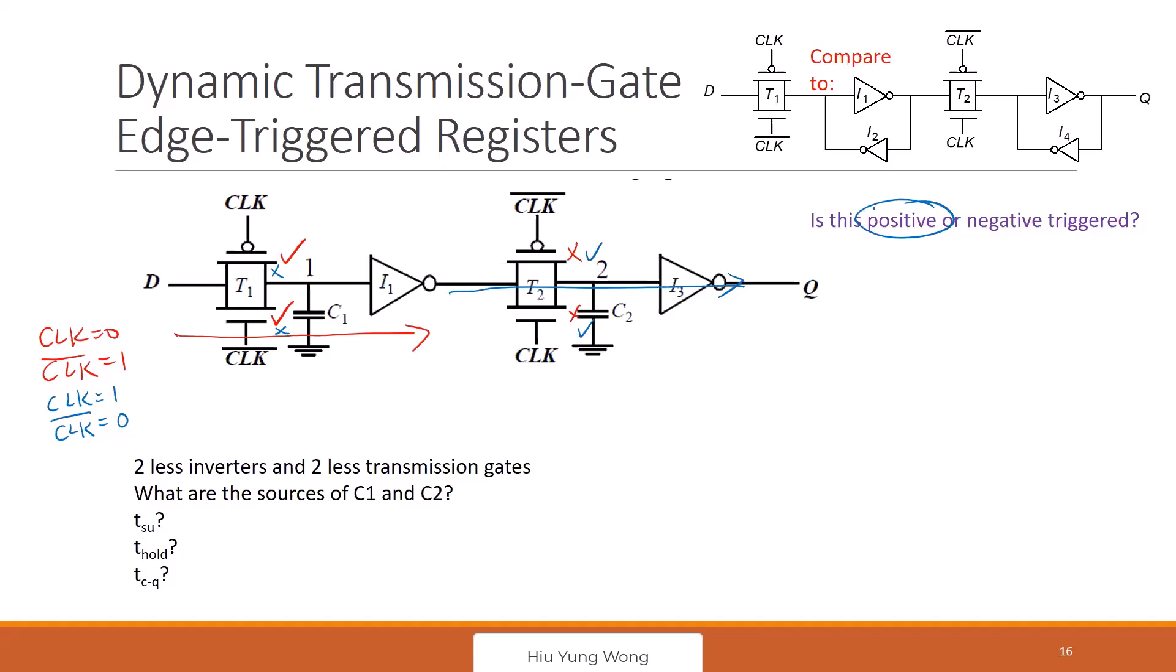Okay, any questions? Okay, if no question, right? So, first thing we want to study is we say that we have two less inverters and two less transmission gates compared to the full one.